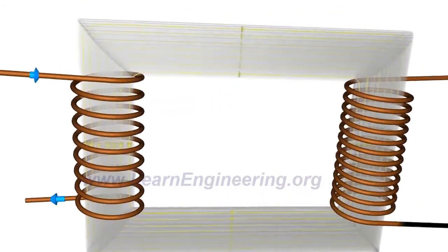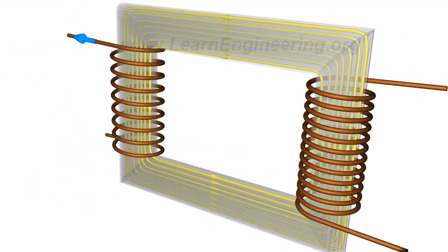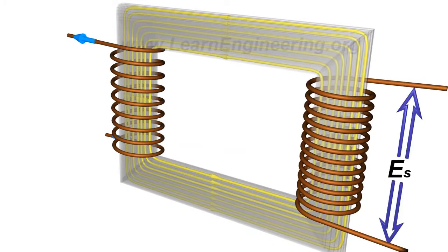This fluctuating magnetic field will induce an EMF in the secondary coils due to electromagnetic induction.